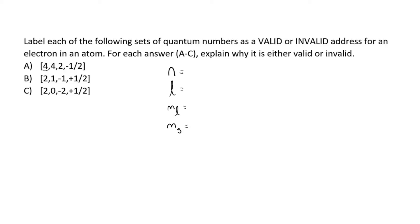Always start with the shell. For the first one, the primary quantum number is four — a four shell, that works. The angular momentum quantum number is also four. I'm already seeing a problem here: if we have a four shell, the angular momentum quantum number can only be zero, one, two, or three — it's always one less than the shell. So this is invalid.